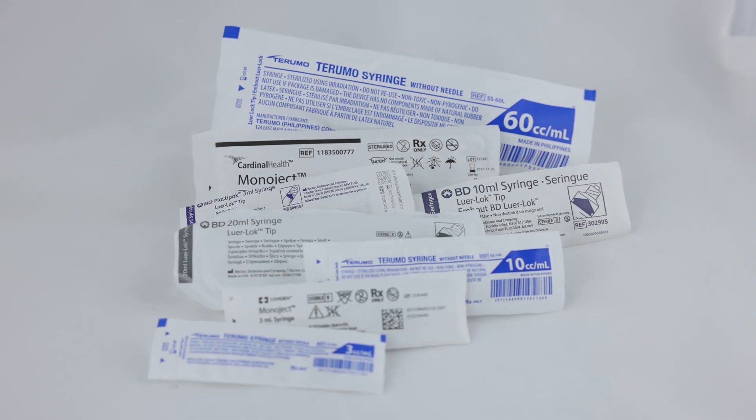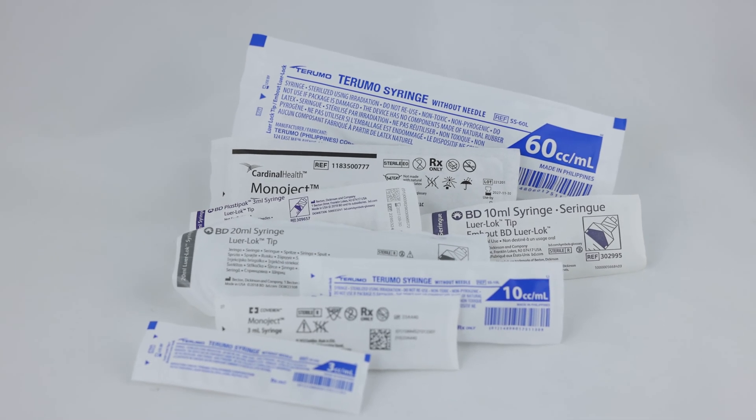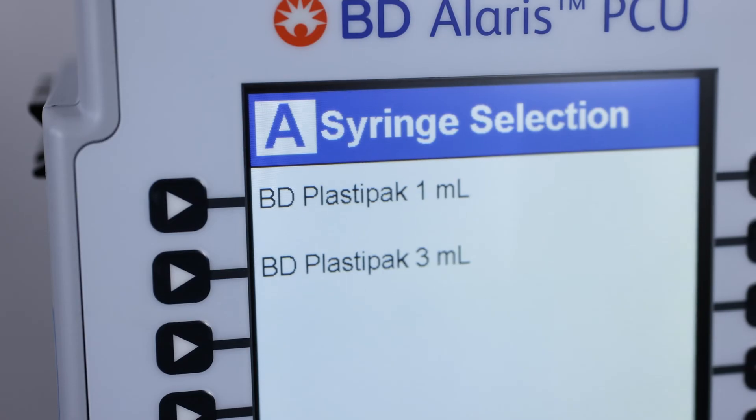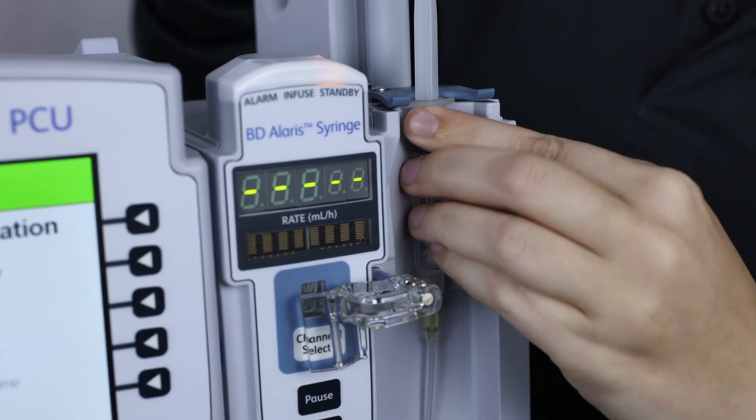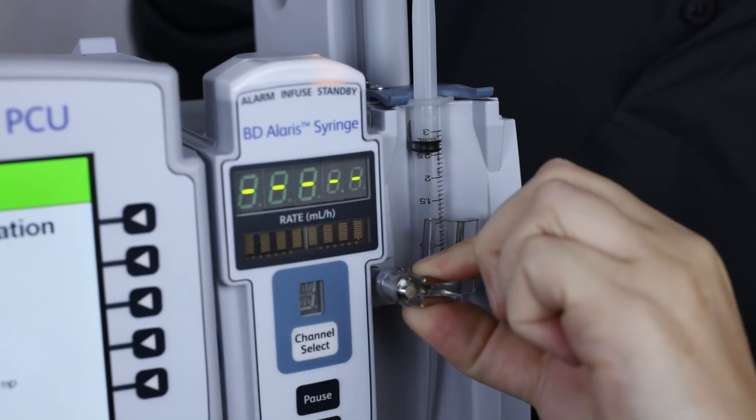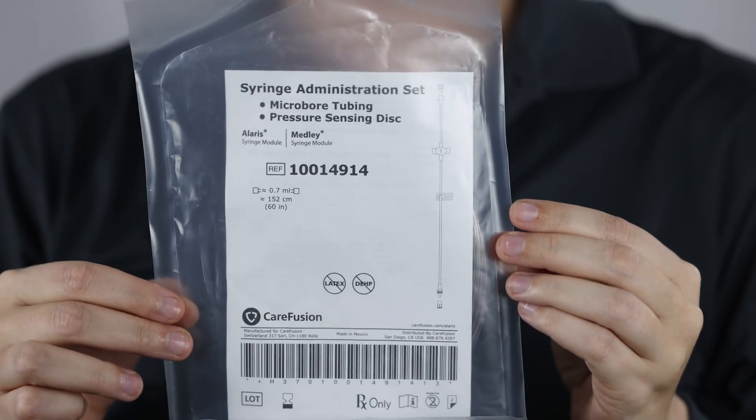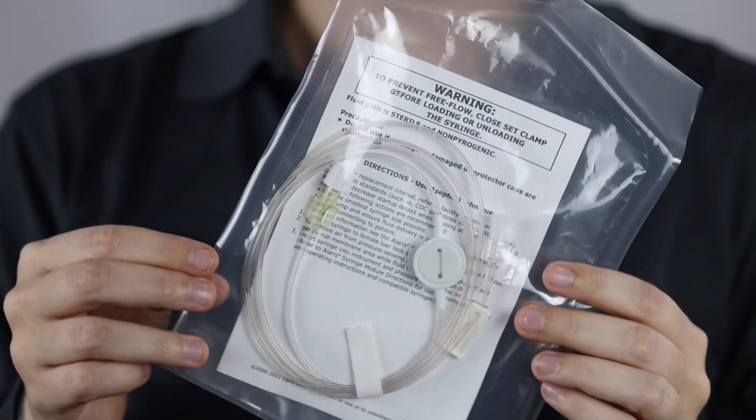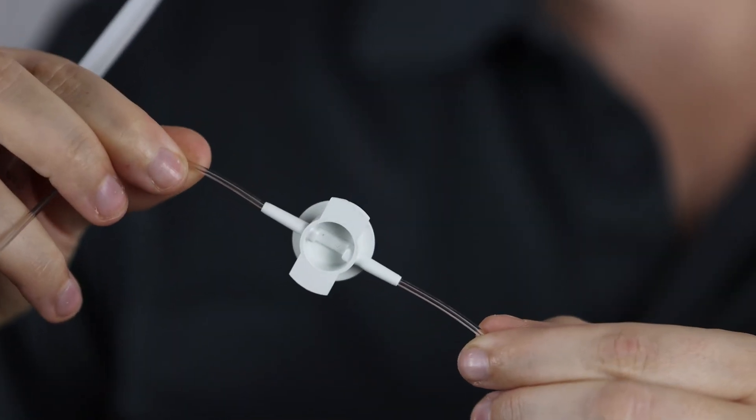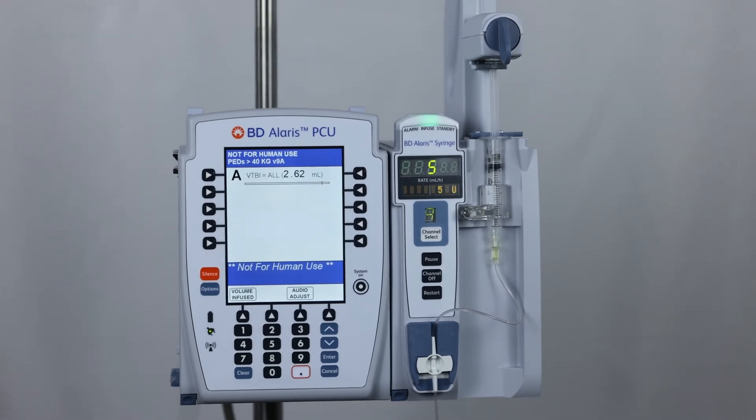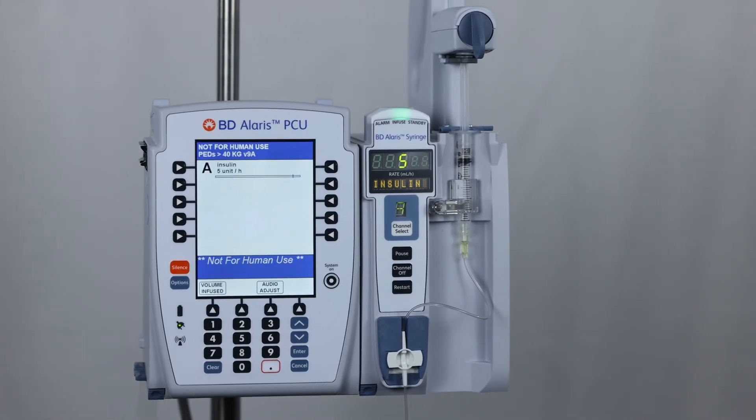Acceptable syringes to use with the 8110 syringe module include those manufactured by BD, Monoject, and Terumo, ranging in size from 1 milliliter to 60 milliliters. The pump module has an auto-detect barrel clamp that senses the size of the compatible syringes. Specific tubing sets manufactured by BD are available that include a special sensor disc that closely monitors the pressure inside the line when connected to a patient. The flow rate range for the Alaris 8110 is from 0.01 to 999 milliliters per hour.